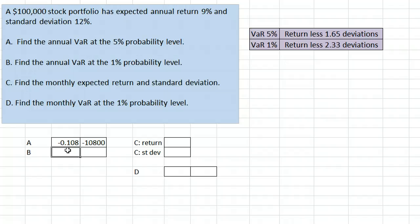Our next question asks for the VAR at the 1% probability level. The procedure is the same except that we take the return less 2.33 standard deviations. In our case, that's the return 0.09 minus 2.33 times the standard deviation 0.12. That gives negative 18.96%. Converting to a dollar amount by multiplying by our value $100,000 gives negative $18,960.